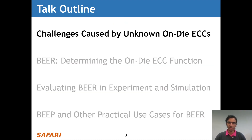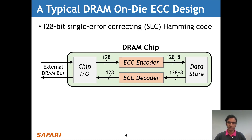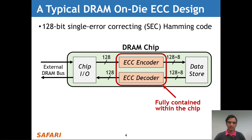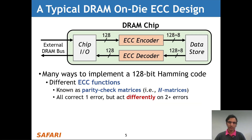Here's a high-level outline of my talk. I'm going to start out by talking about the challenges caused by unknown on-die ECCs. Here is a typical on-die ECC code used in modern DRAM chips — typically a 128-bit single error-correcting Hamming code. The encoder and decoder, which together form the ECC logic, are fully contained within the DRAM chip, and this means that they are completely invisible outside the DRAM chip. There are many ways to implement this 128-bit Hamming code, corresponding to different ECC functions known as parity check matrices or H matrices.